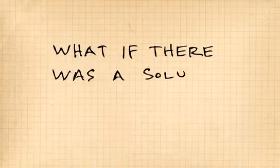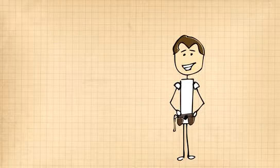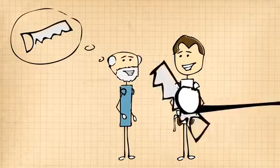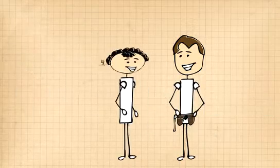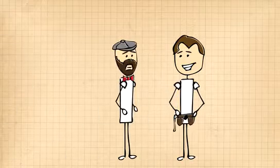But what if there was a solution to his problem? What if there was a way for Jack to order the product he wanted and the quantities he wanted without overpaying for it? What if he could get exactly what his customers wanted when they wanted it, just in time?